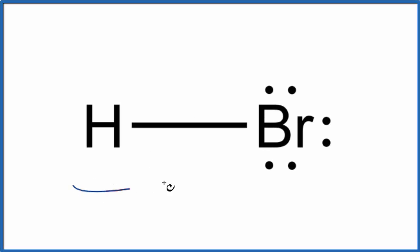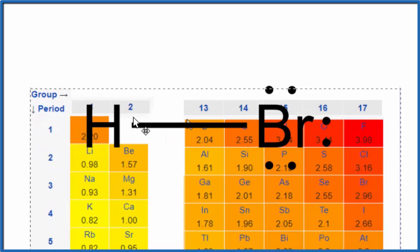In this video we'll look at whether HBr is polar or nonpolar. When we look at HBr, we're trying to figure out this bond right here between the hydrogen and the bromine. Are the electrons shared equally or unequally? Let's take a look at some electronegativity values to figure that out.